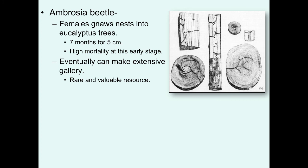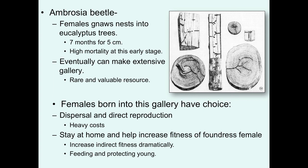This is also seen in ambrosia beetles. Females tunnel into eucalyptus trees — a very slow process, taking seven months to dig a colony five centimeters in length — with very high mortality at early stages. Eventually they create extensive galleries that are rare and valuable resources. Females born into one of these galleries face a choice: dispersal and direct reproduction with prohibitive costs, or stay at home and help increase the fitness of the foundress female — dramatically increasing indirect fitness by feeding and protecting the young in these galleries. They have very limited options for direct fitness; by staying, they significantly increase their mother's reproductive success and gain indirect fitness.